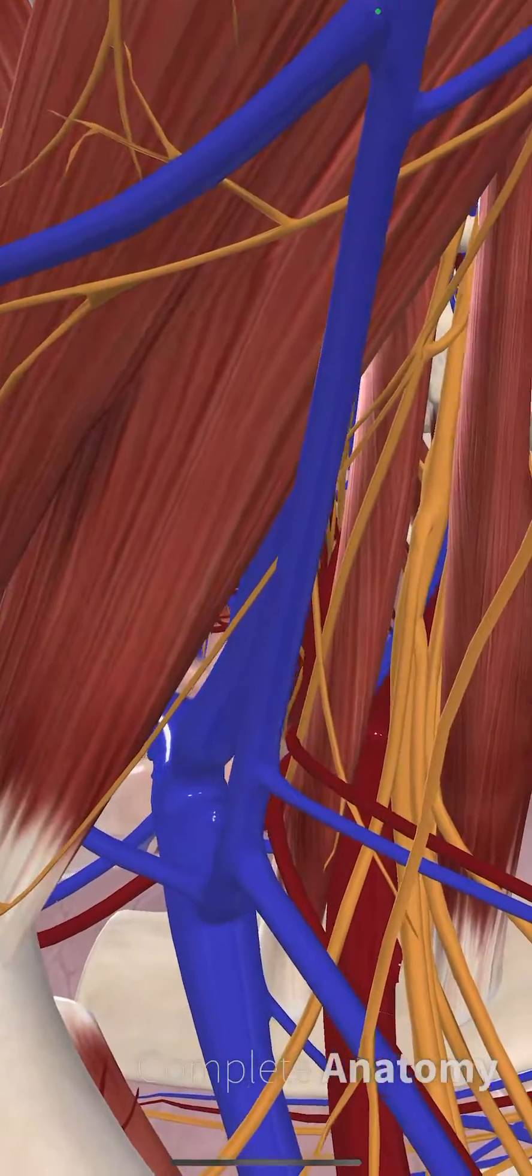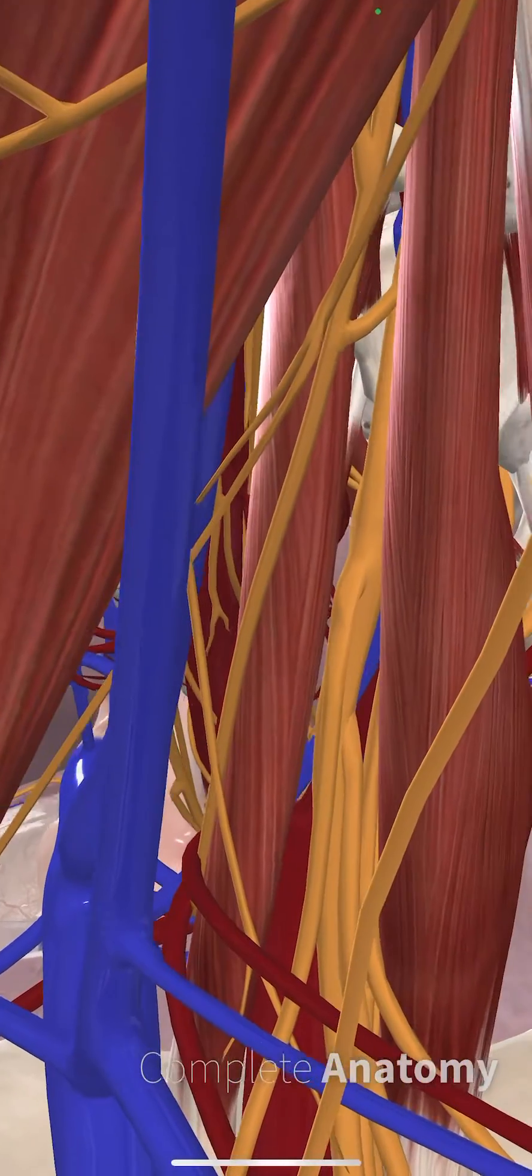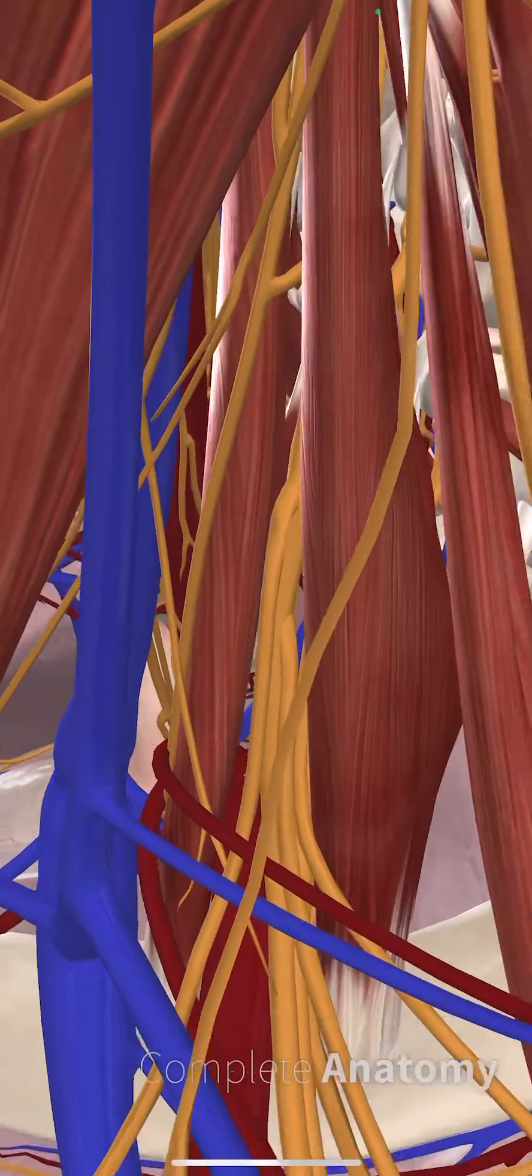You've got the anterior scalene and the middle scalene, the roots of the brachial plexus coming out in between those, becoming trunks and then the divisions.